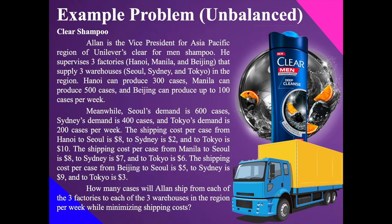If you recall, in our previous topic on linear programming, one of our examples was Clear Shampoo. We used linear programming to find the proper combination of Clear Shampoo to produce — men's and women's shampoo. Now, assuming production is done, the problem here is to apply the transportation model to ship the produced shampoo to our warehouses. This example was chosen to connect it to our previous topics, since all topics are actually connected.